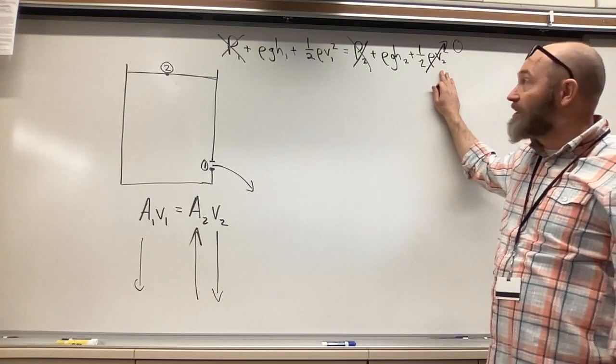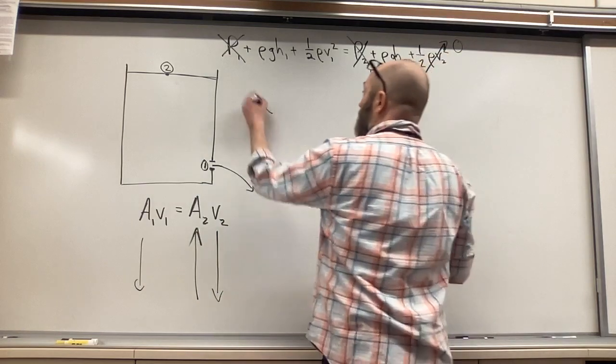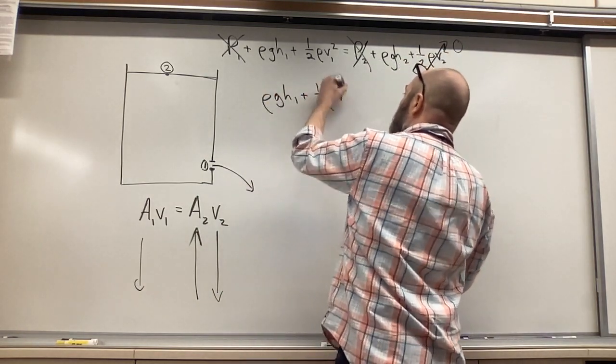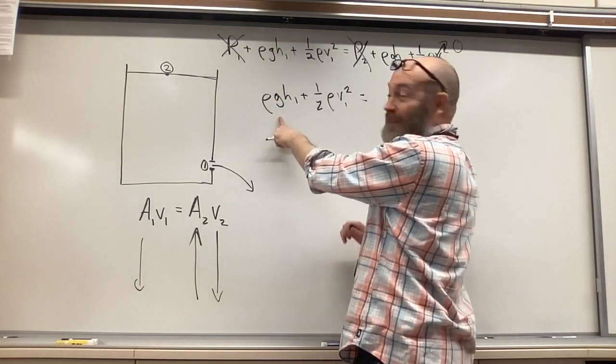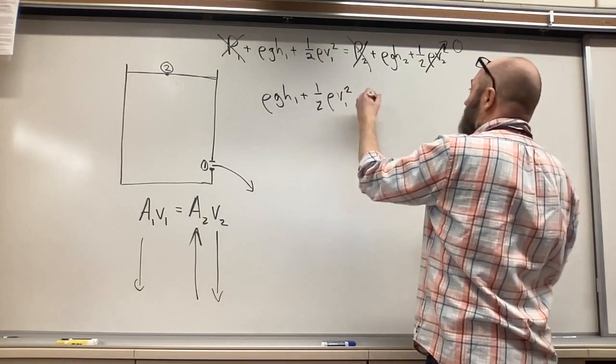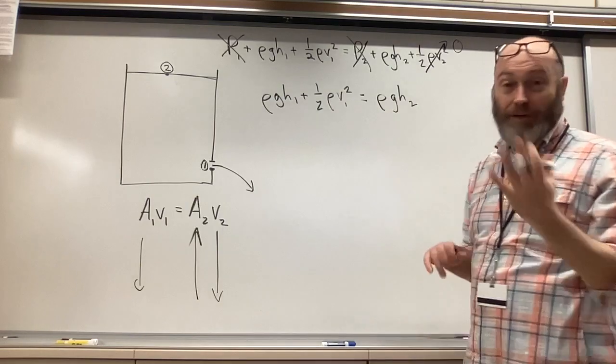Well, if that's essentially zero, then you end up with, this is your equation, rho gh1 plus one half rho v1 squared. Again, we get this from potential energy per volume, kinetic energy per volume, and then rho gh2, potential energy.